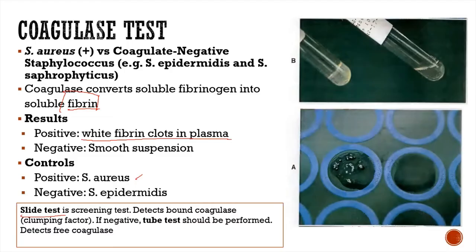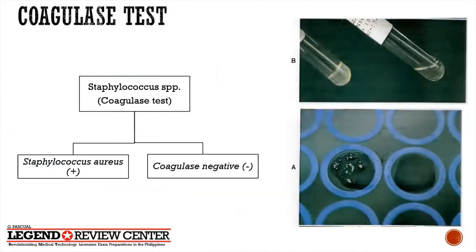There are two types of coagulase test: the slide test and the tube test. The slide test is a screening test that detects bound coagulase or the clumping factor, whereas the tube test detects free coagulase. Either way, the positive result is clotting. In the algorithm, catalase-positive gram-positive cocci are Staphylococcus, so you perform the coagulase test.